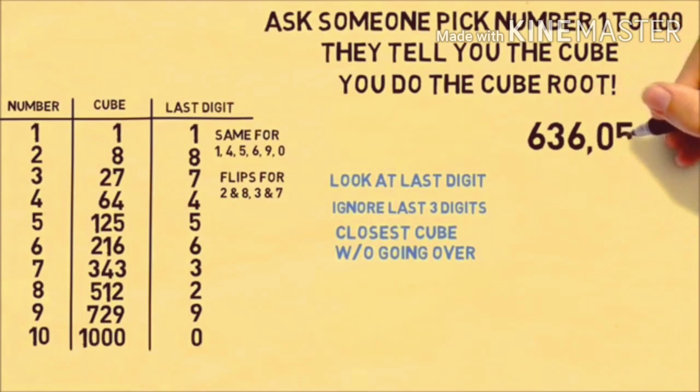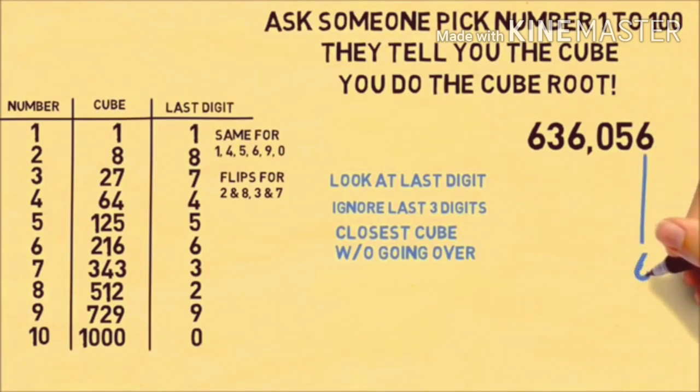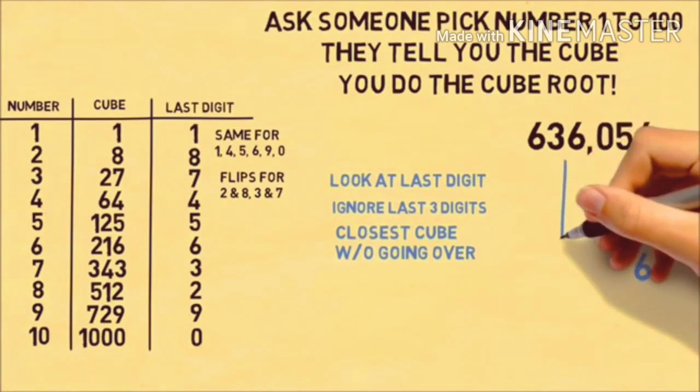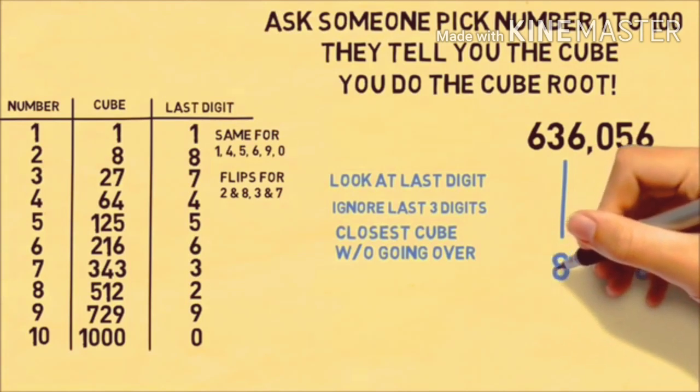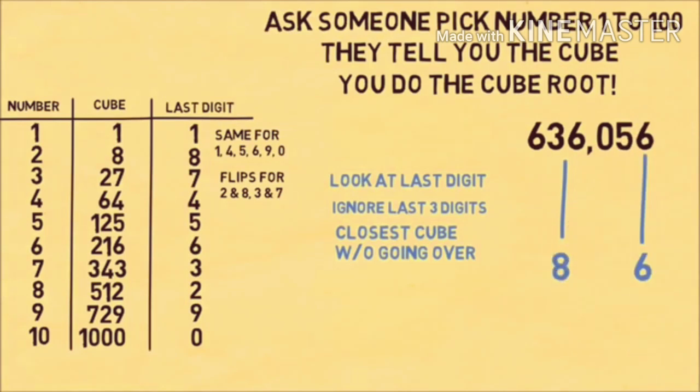Let's imagine they tell you the number is 636,056. We look at the last digit, which is 6, and that corresponds to the number 6. Then we ignore the last three digits and look at 636. That's between the cubes of 8 and 9, so we put 8. Therefore, the cube root is 86.